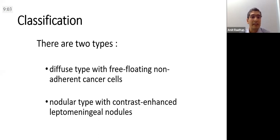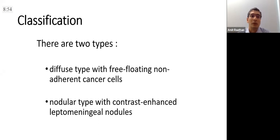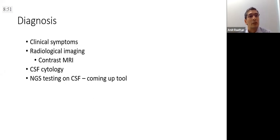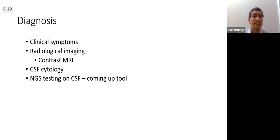There are two types of leptomeningeal metastasis: the diffuse type with free-floating non-adherent cancer cells in the CSF, and the nodular type with contrast-enhanced leptomeningeal nodules. For diagnosis, patients may present with cerebral or cerebellar symptoms, spinal cord compression, or cranial nerve palsies — but keep a very close watch on patients with very vague symptoms who are neurologically deteriorating without obvious findings on PET or CT.